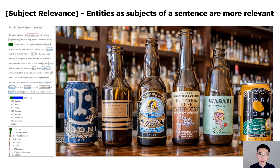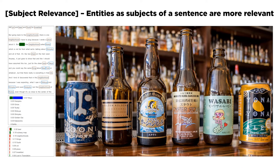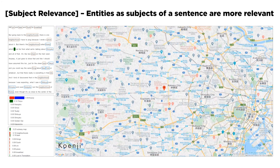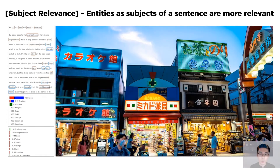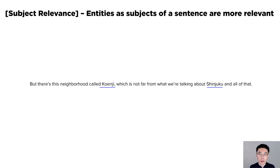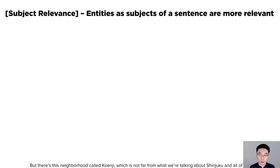CrossCast also identifies relevant locations based on how they are mentioned. "But there's this neighborhood called Koenji, which is not far from what we're talking about, Shinjuku and all of that." Here, Koenji is more relevant because it's the subject of the sentence, whereas Shinjuku is the object for comparison.